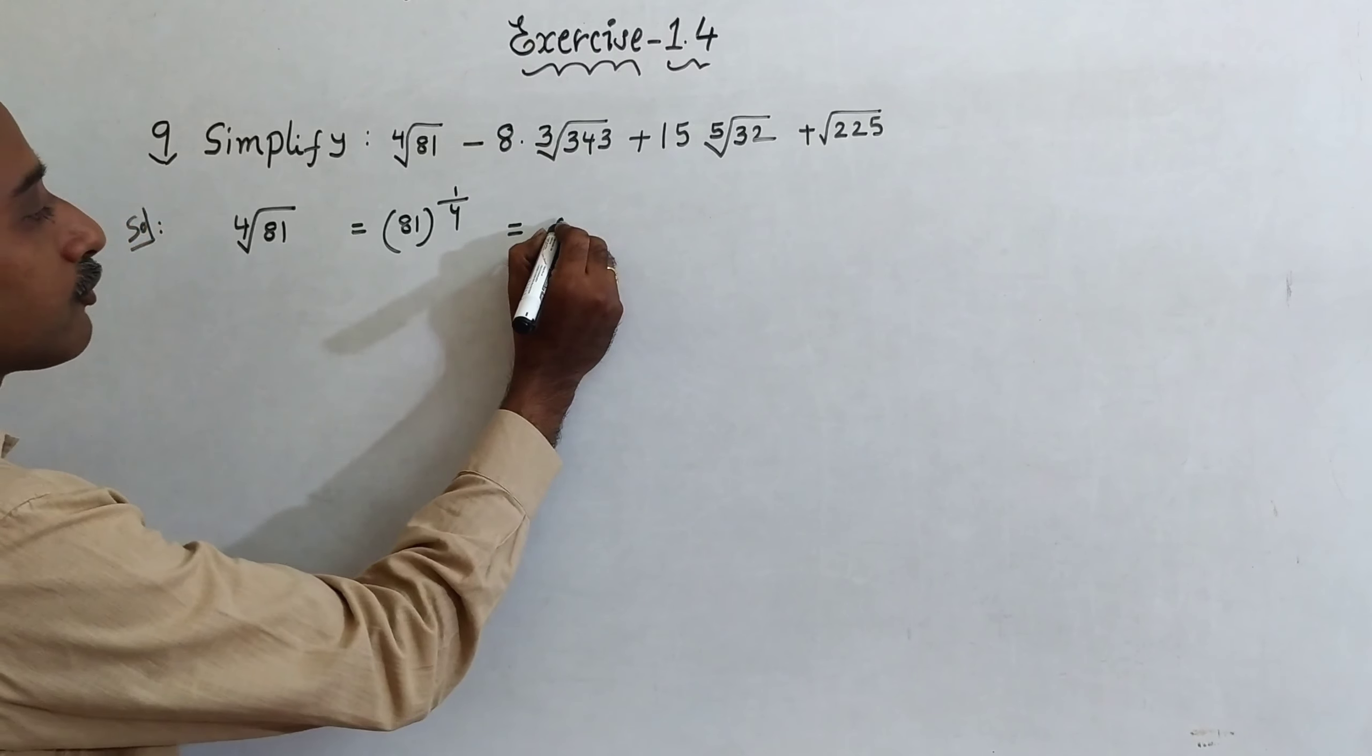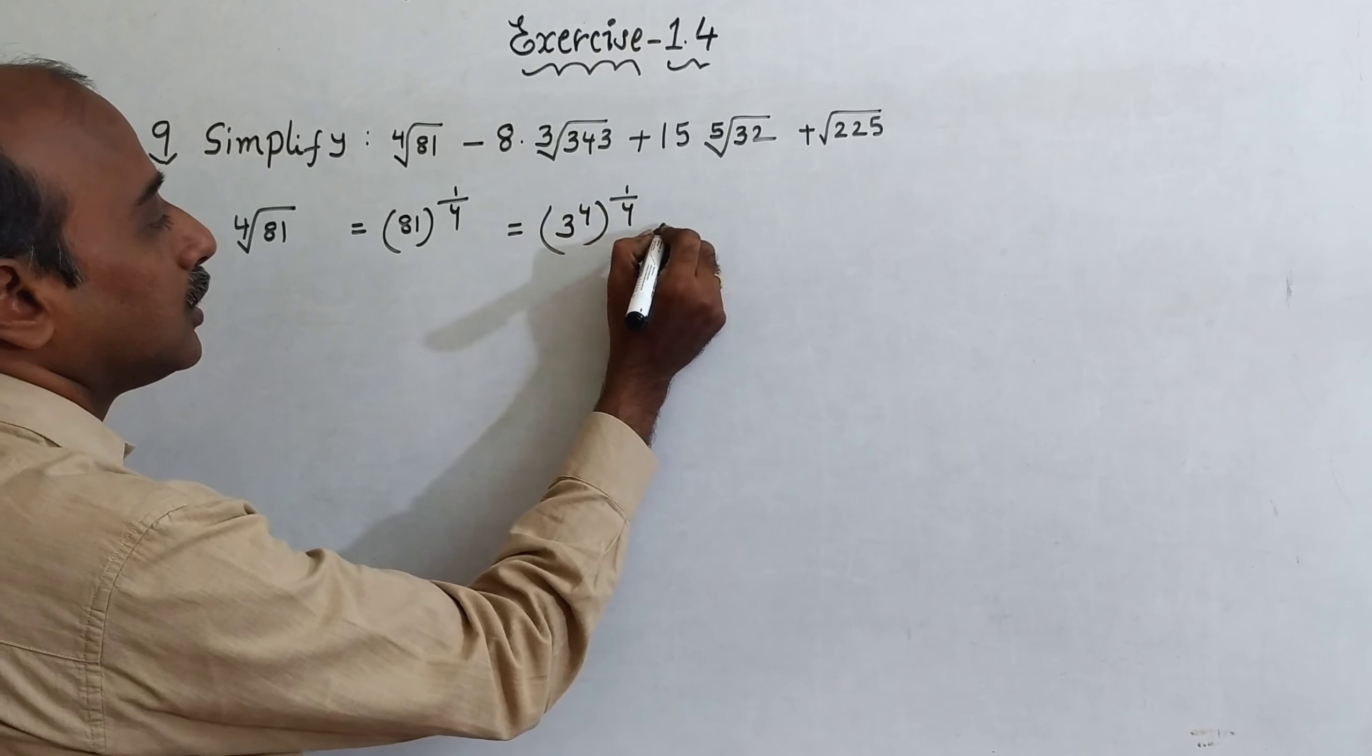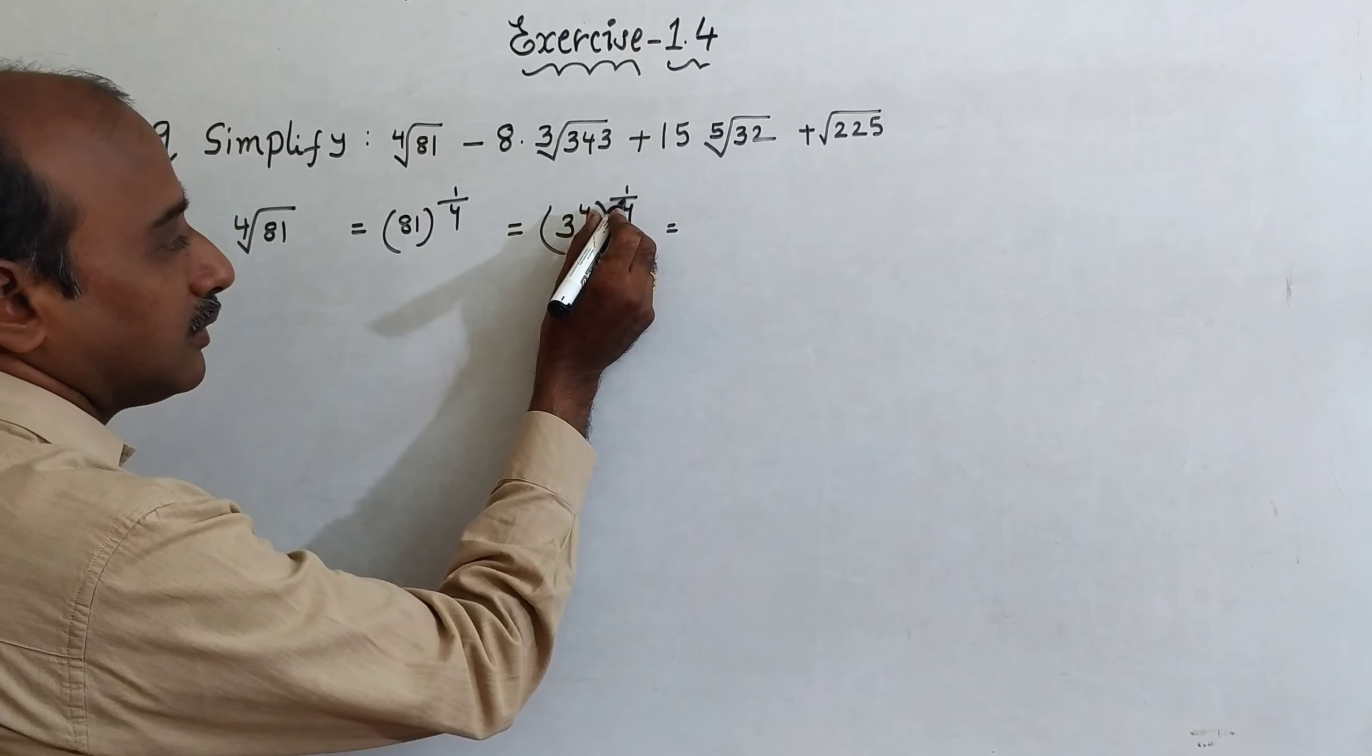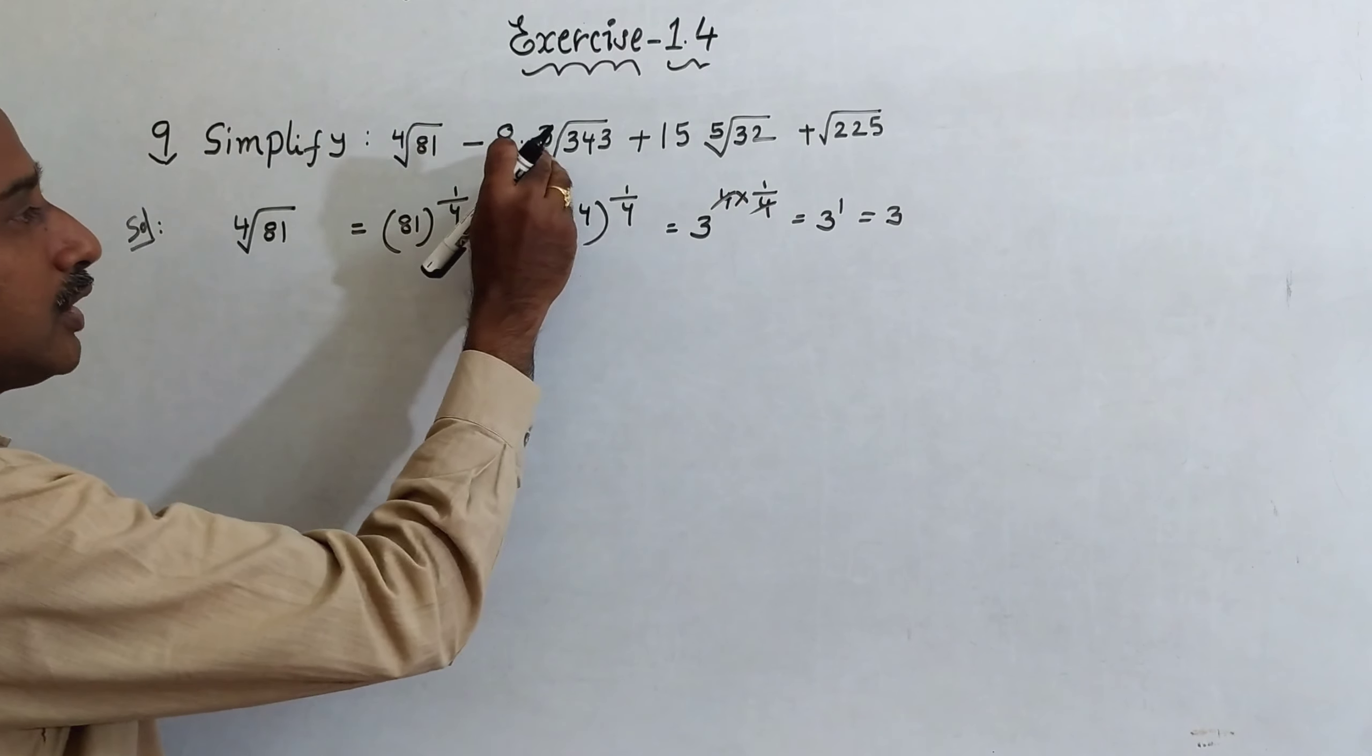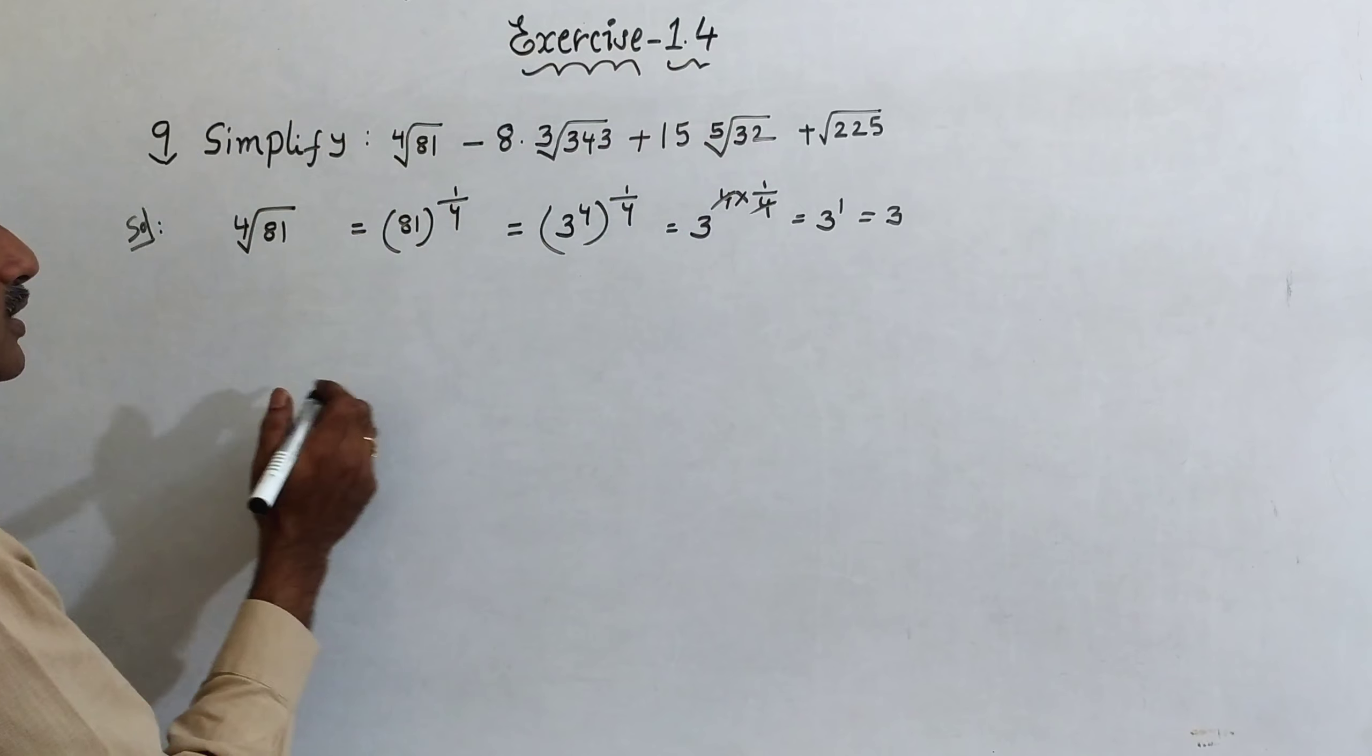81 you can write 3 power 4, all power 1 by 4. This is a power m, all power n, is equal to a power mn. 3 power 4 into 1 by 4, 4 and 4 cancel, 3 power 1, that is equal to 3. First of all we are doing individual terms, then we can substitute in this.